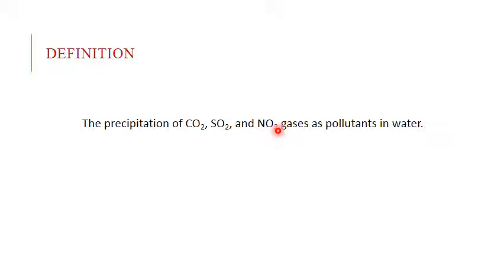If pH is 7, that is called Neutral. More than 7 is called Basic, and below 7 is called Acidic. Normally, rain water is slightly acidic due to the presence of CO2 gas. If SO2 and NO2 are present in water, the pH gets decreased to a range of 1 to 2. This type of precipitation is called Acid Rain.